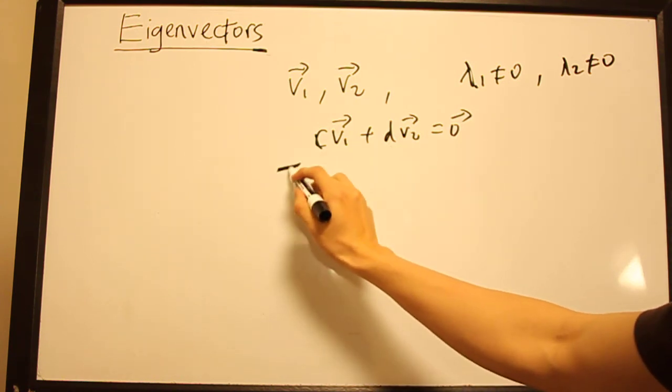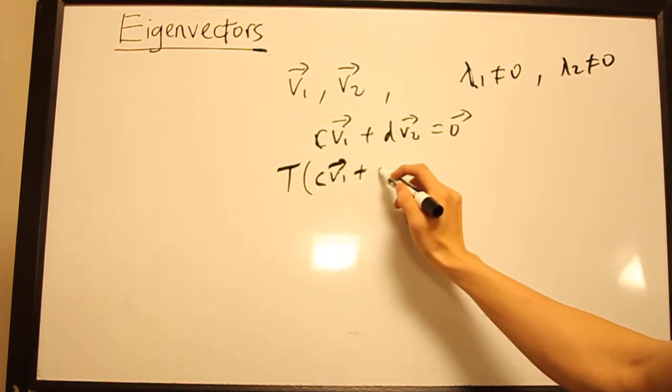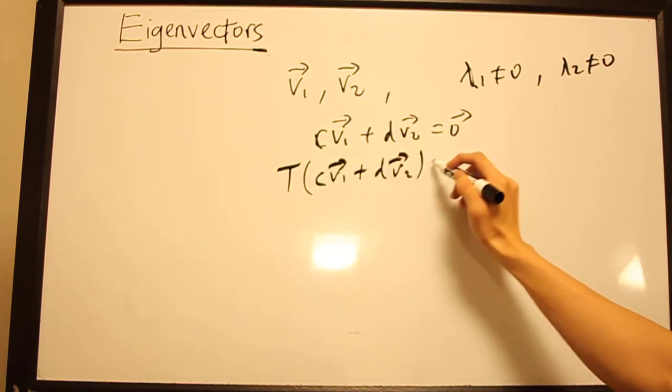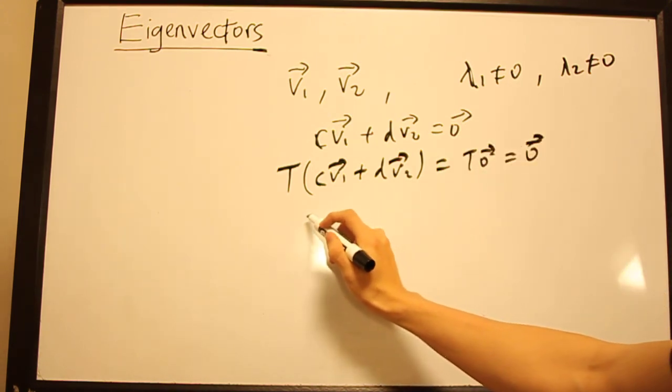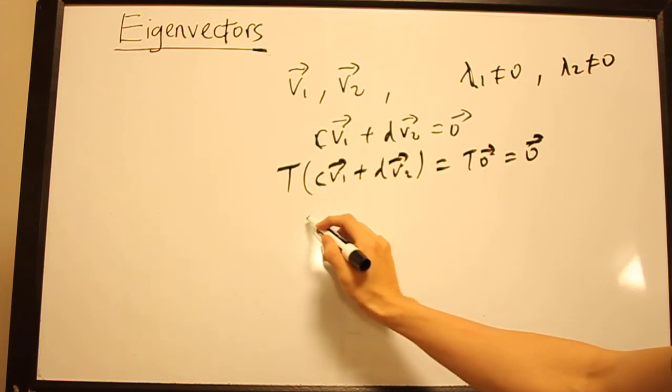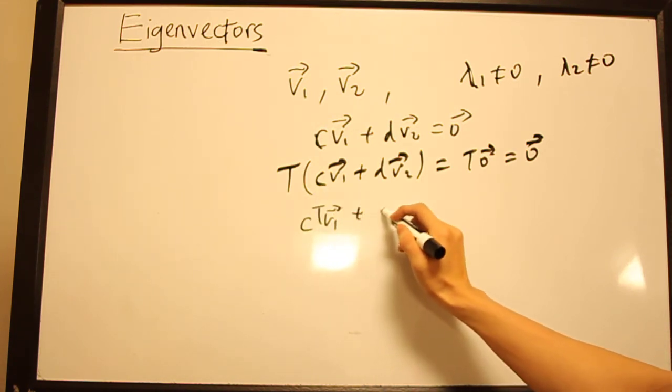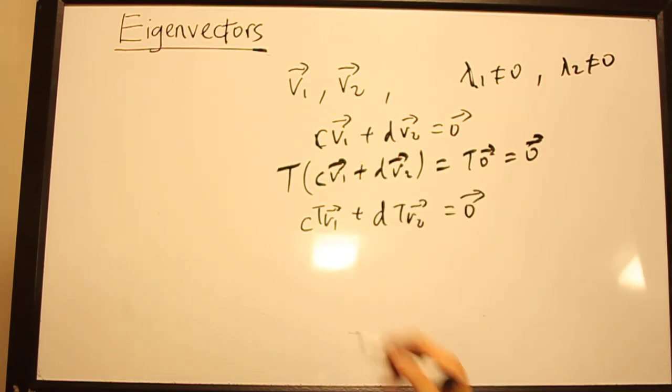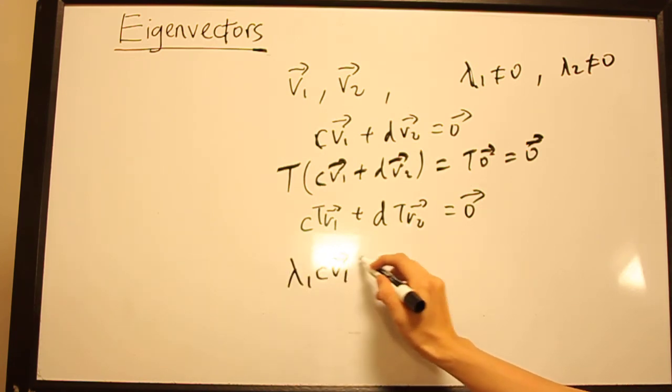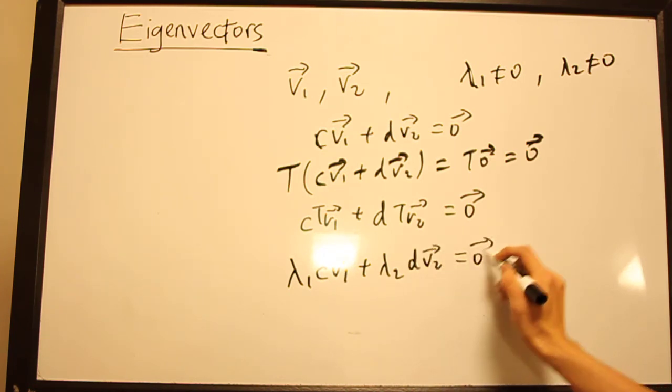So we multiply this whole thing by T. And that gives us T(0) equals 0. And if we bring T in, we have that C·T(V₁) plus D·T(V₂) equals 0. And we have that λ₁·C·V₁ plus λ₂·D·V₂ equals 0.